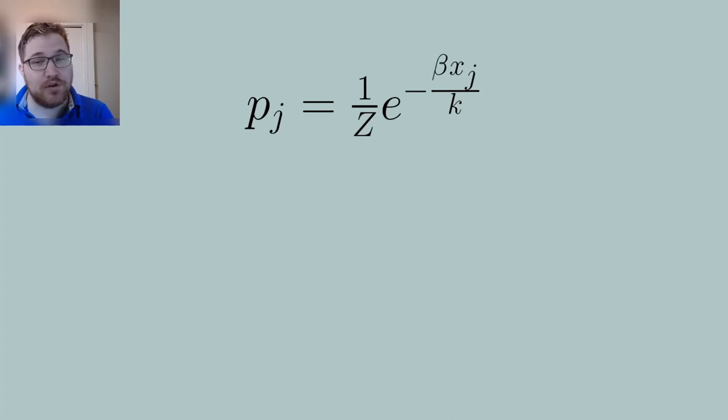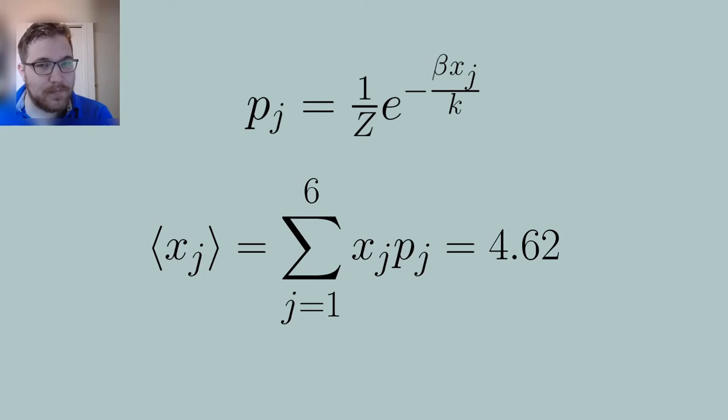So we are left with a probability distribution that looks like this for each value of j. That is actually quite the beautiful formula. So how do we actually choose beta? We find beta by applying the constraint that the expected face value is 4.62.